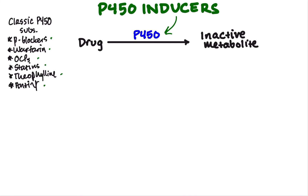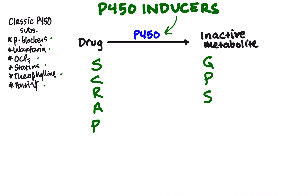The mnemonic for the P450 inducers is SCRAP GPS. It's not going to be enough to just know the mnemonic — you need to know what the drugs are, because when we talk about the inhibitors, some of the same letters show up. So you need to know what each letter corresponds to.